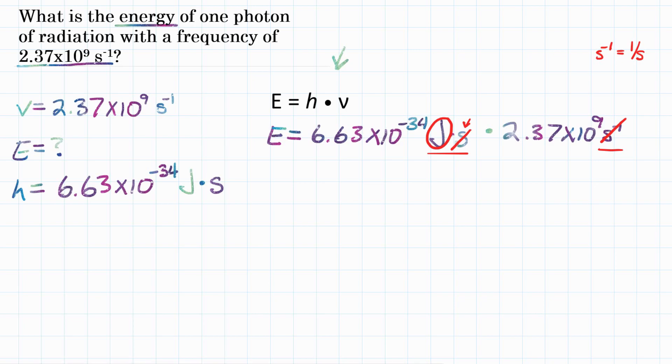So now we're just going to plug this into our calculator. You're going to do exactly as it is in the equation, 6.63 times 10 to the negative 34. Make sure you're off the exponent in your calculator. And then you're going to hit times. And then we're going to do frequency 2.37 times 10 to the 9th. Hit equals, and you should get 1.57131 times 10 to the negative 24th.